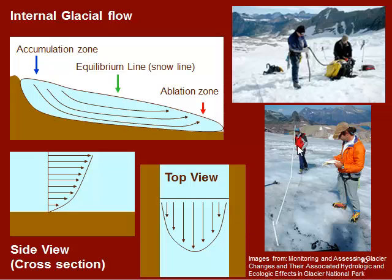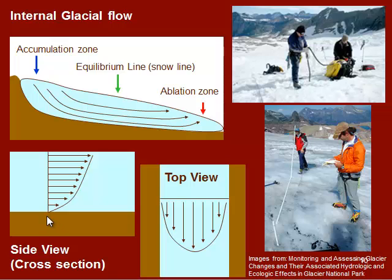The same thing applies if we look at the top view. Glaciologists have stakes put in the ice that they come back to every year, or periodically during one summer, to take measurements. They place an array of stakes in a perpendicular line across the ice, and when they return, they find that the glacier is moving faster in the center than on the edges — for the same reason: the edges are interacting with the sides of the valley, so they move much slower.